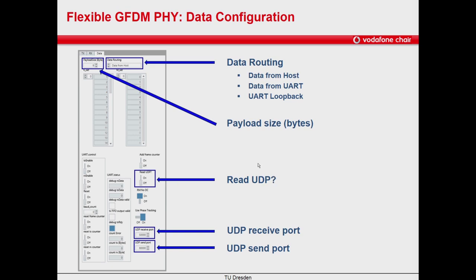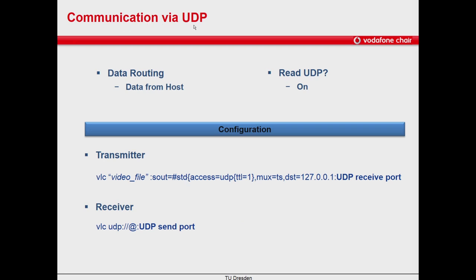This means that the transmitter will receive the data as UDP packets from the video streaming server, and the receiver will send the output via UDP to the player to be displayed. UDP receive port refers to the UDP port number used to receive the data from the video stream, and UDP send port is the UDP port number used to send the data to the video stream player.